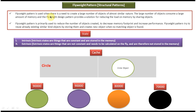Flyweight pattern is used when there is a need to create a large number of objects of almost similar nature. In this case I want to create around 2 lakh circle objects but in different colors, while the shape is constant. The large number of objects consume large amount of memory, and Flyweight design pattern provides a solution for reducing the load on memory by sharing objects. Instead of creating 2 lakh new circle objects, I created one circle object without color and put it in the hash, and I am reusing that circle object again and again for different colors — in this way improving performance.